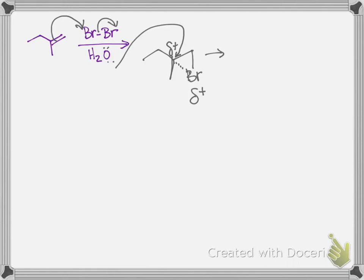It's not easy to show this in two dimensions, but when the water attacks, the water attacks from the backside of where the bromonium ion is. So if the bromine is on the front, the water will be on the back.